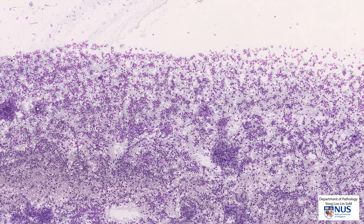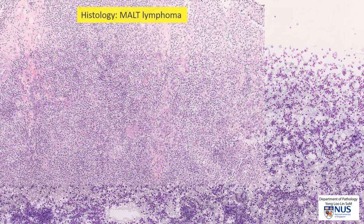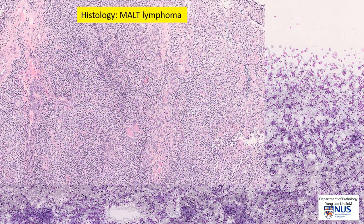These atypical features should prompt clinical correlation. Indeed, this patient had a long-standing history of Hashimoto thyroiditis and had been complaining of a progressively enlarging thyroid nodule. This was reported on cytology as an atypical lymphoid proliferation, and further investigations such as flow cytometry or biopsy were suggested. Eventually this patient went on to have a total thyroidectomy and was found to have low-grade MALT lymphoma.